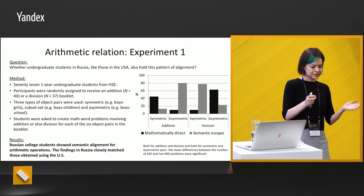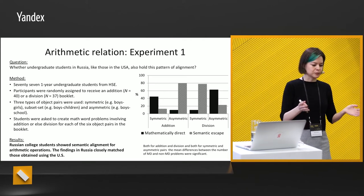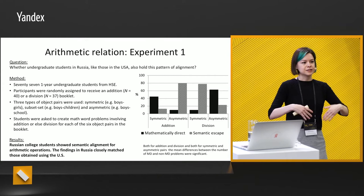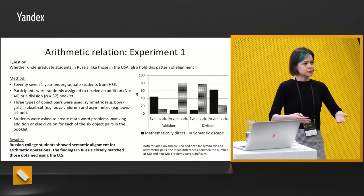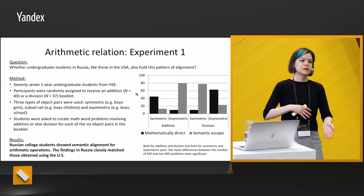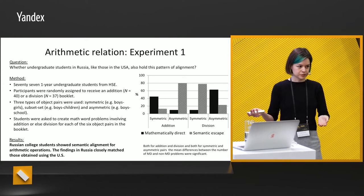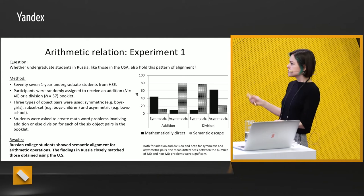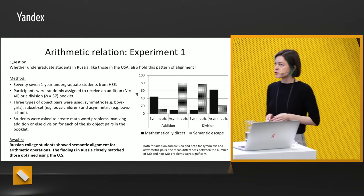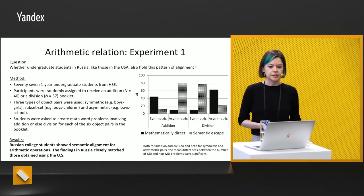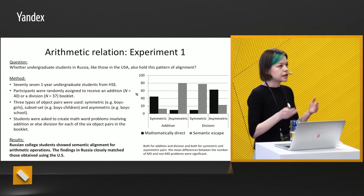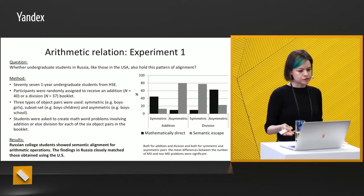For division, the situation was the same. If we asked students to construct a word problem with an asymmetric relationship — such as tulips and vases — it was easier for them to do it, because this is how alignment works. They had tulips and vases and it was easy to construct a problem on division rather than on addition. Russian college students showed semantic alignment for arithmetic operations, just as US students do. These results are closely matched.